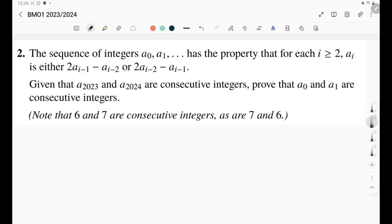All right, so in this question we're given a sequence of integers a_0, a_1, and so on. This sequence has the property that for each i greater than or equal to 2, a_i is either two times a_{i-1} minus a_{i-2}, or it is 2a_{i-2} minus a_{i-1}.